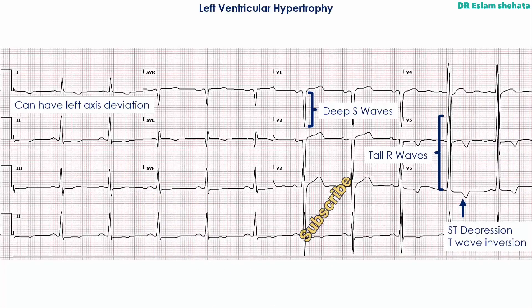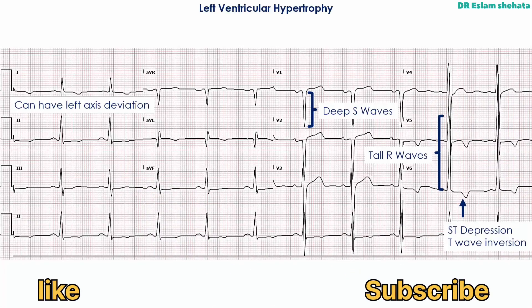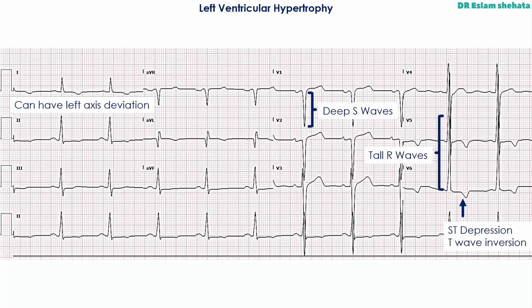So this is left ventricular hypertrophy. The most obvious finding is these QRS complexes are pretty big. As you can see, V6 extends all the way up — it ends up here, that's the top of our QRS complex, halfway into V5's territory.